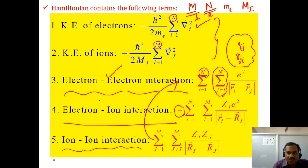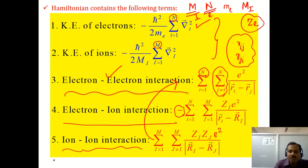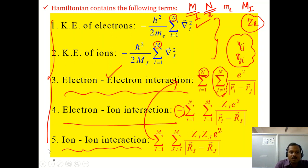The last term is the ion-ion interaction, which is repulsive in nature, analogous in form to the electron-electron interaction. Here I runs from 1 to M and J not equal to I runs from 1 to M, so it is Z_i Z_j e-squared divided by the modulus of R_i minus R_j. Each ion has charge Z_i e, Z_j e, and so on. This gives us the complete, complicated Hamiltonian of the solid containing ions and electrons.